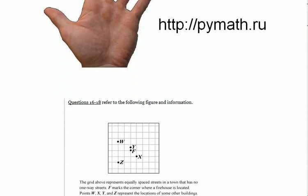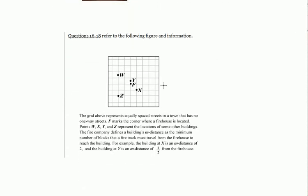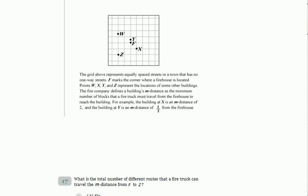Let's solve this problem. The grid above represents equally spaced streets in a town with one-way streets. F marks the corner where a firehouse is located, and so on.